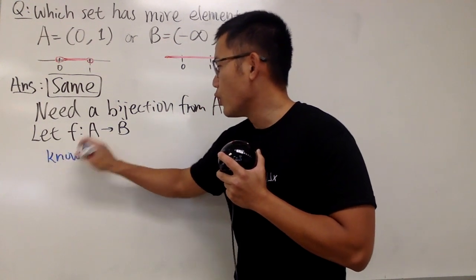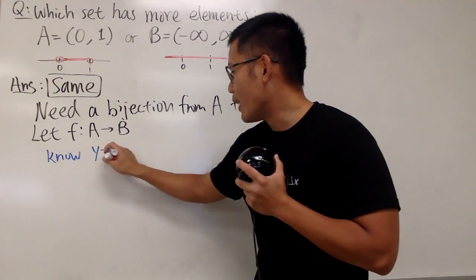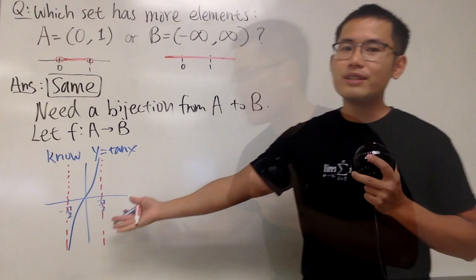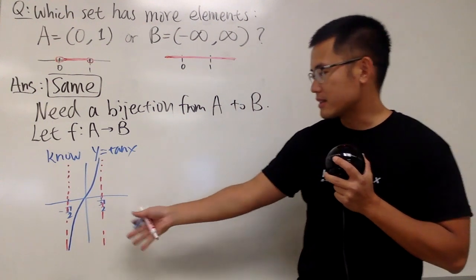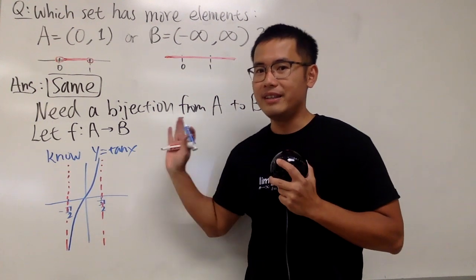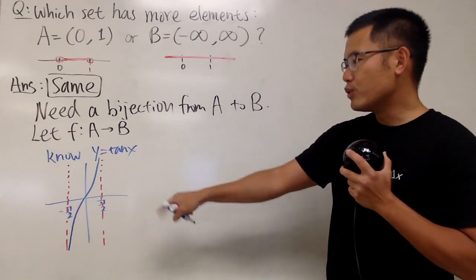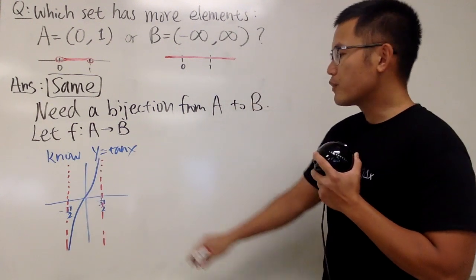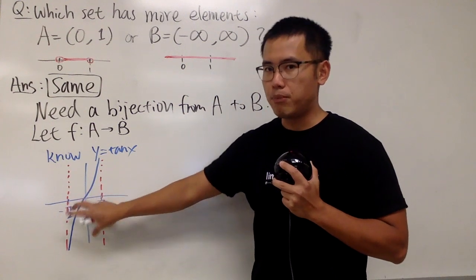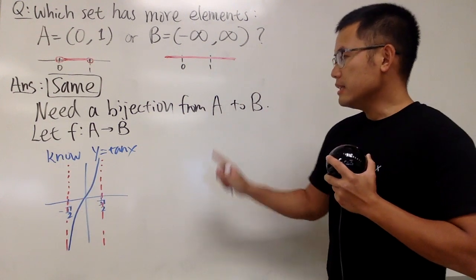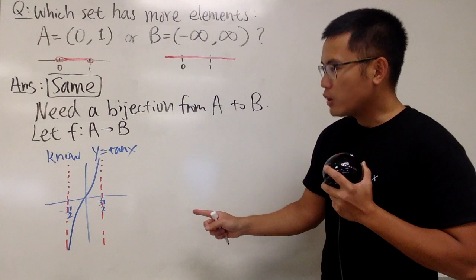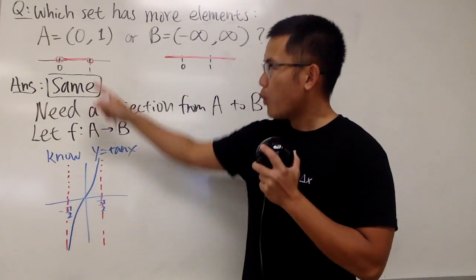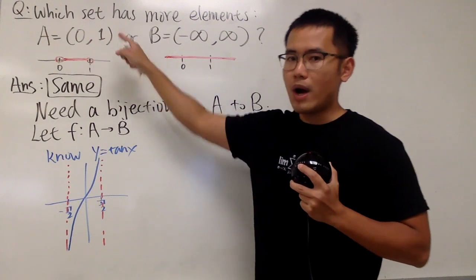So, let me just talk about this one right here. This is what we know when we have y is equal to tangent x. Look at the graph real quick. As you can see, this right here is clearly 1 to 1 and onto. It's clearly 1 to 1 because it does pass the horizontal line test. And of course, we just want to focus on this part here. This is what we know, but unfortunately, the domain right here is going from negative pi over 2 to pi over 2. We want from 0 to 1.